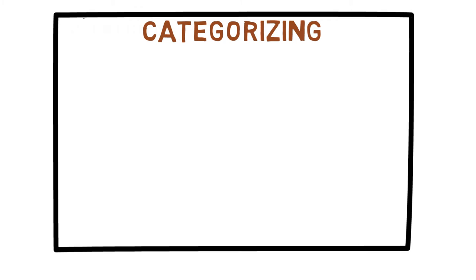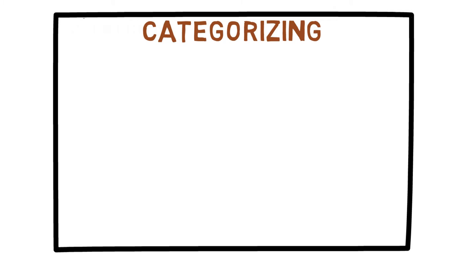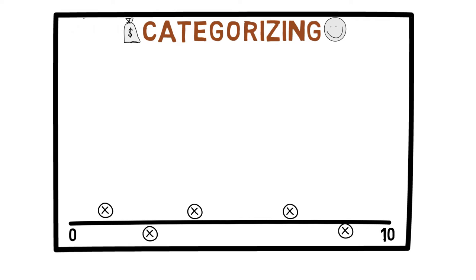Pick an area of your life. You probably have certain goals you would like to achieve in this area. You might have financial goals or want a happier life. Consider 10 years from now — you look back at the decisions and events that helped or hurt you in achieving your goals. I would like to categorize these events and decisions into two groups: high impact and low impact.